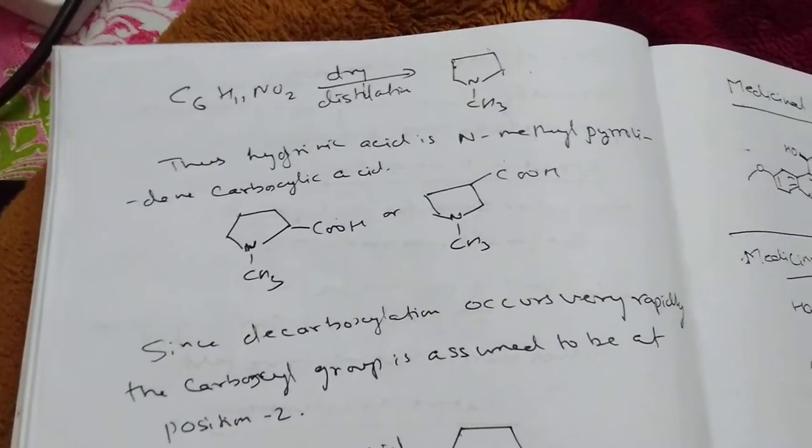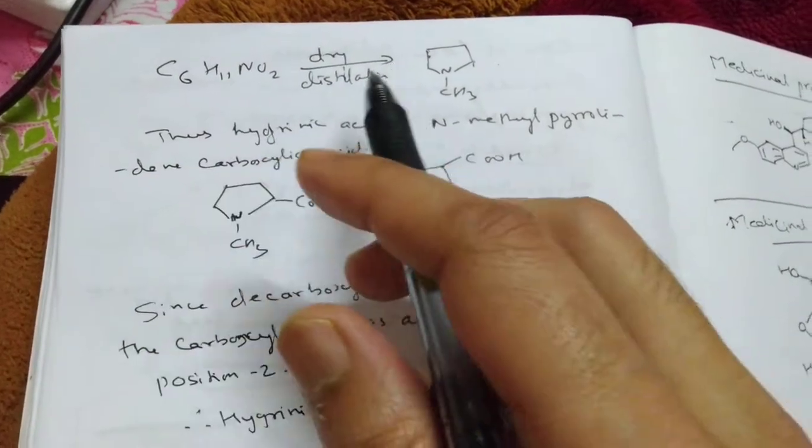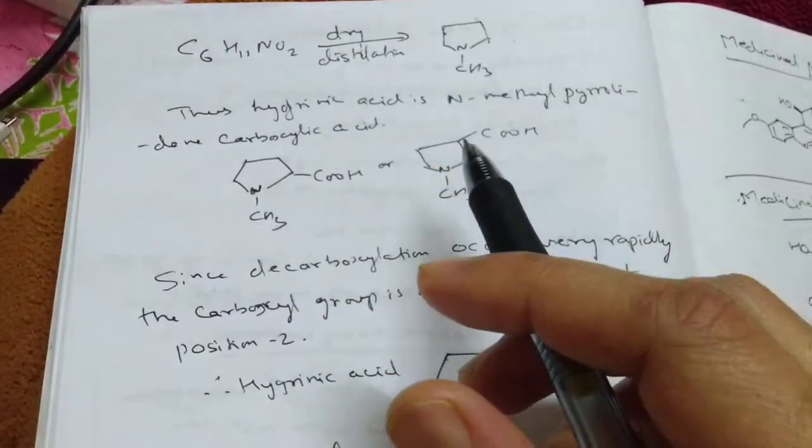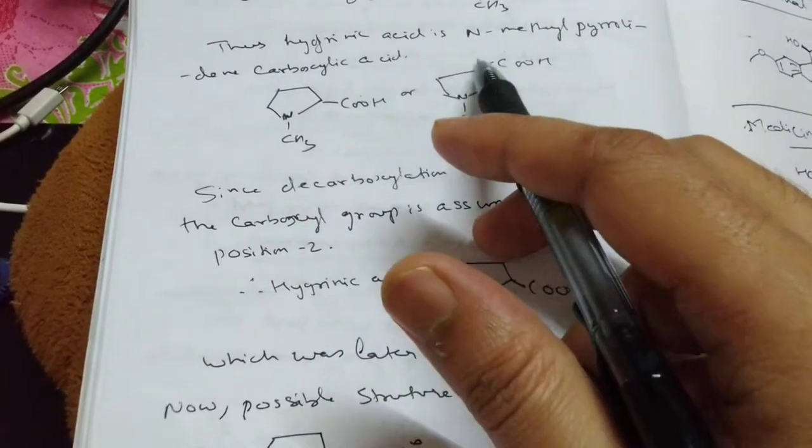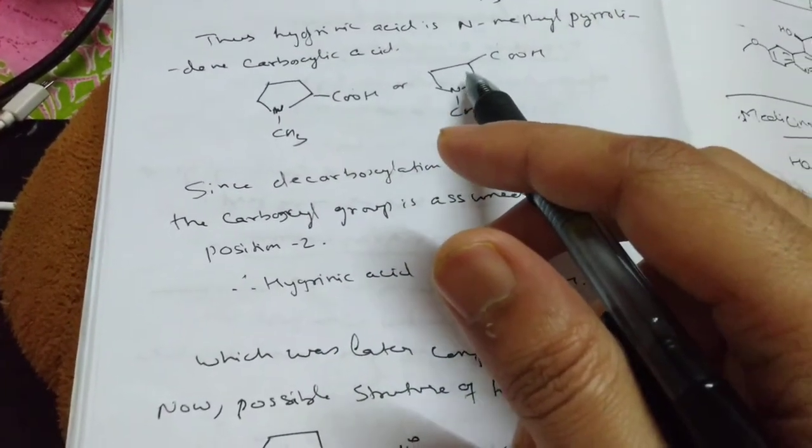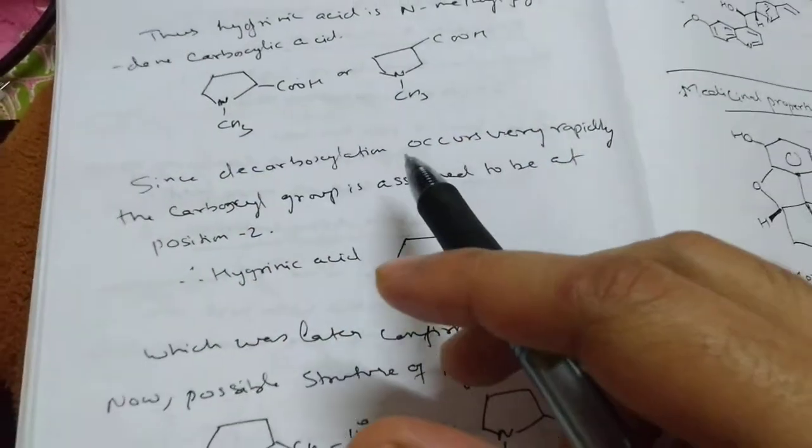Because decarboxylation happened immediately, they saw that some kind of assistance must be there, so COH if it is far, nitrogen cannot assist in decarboxylation. So this COH must be in the neighboring carbon.